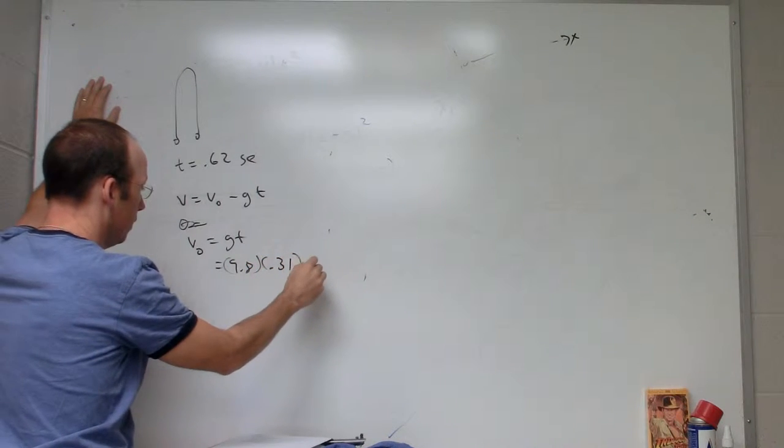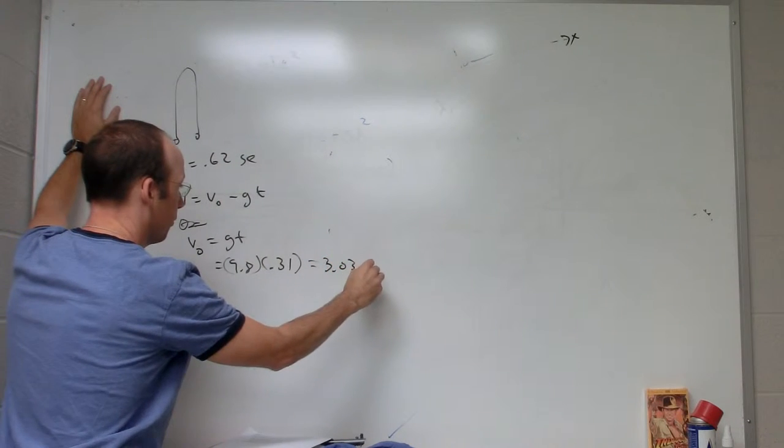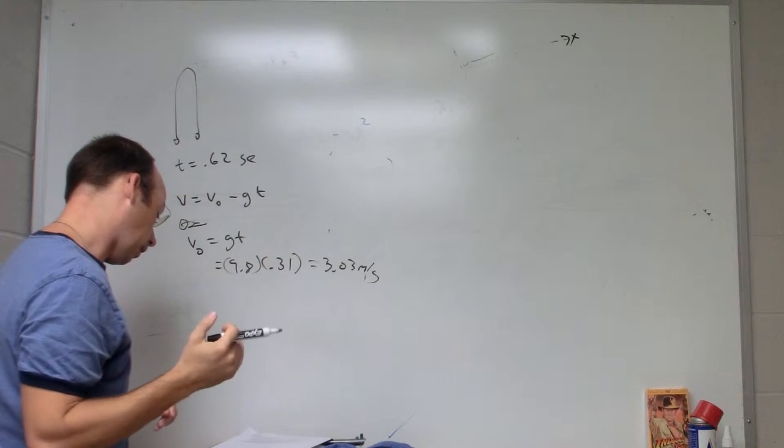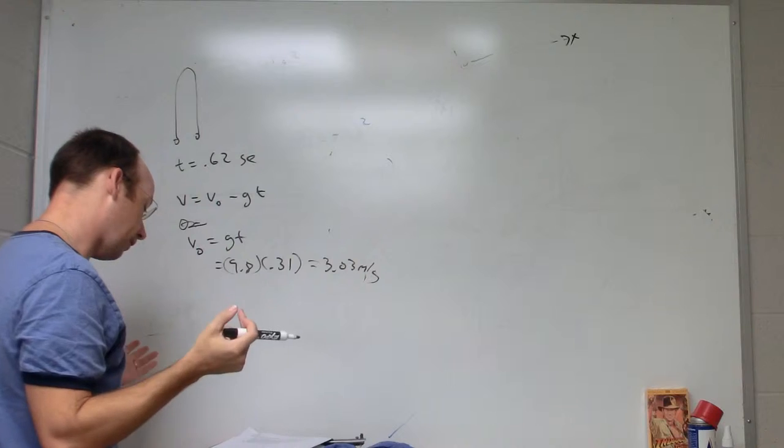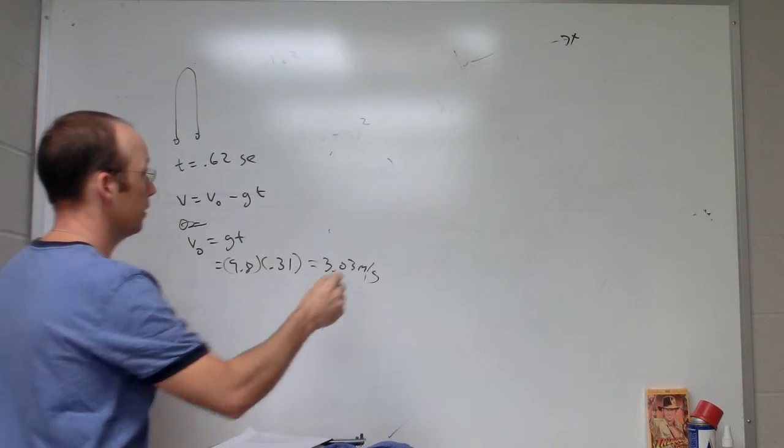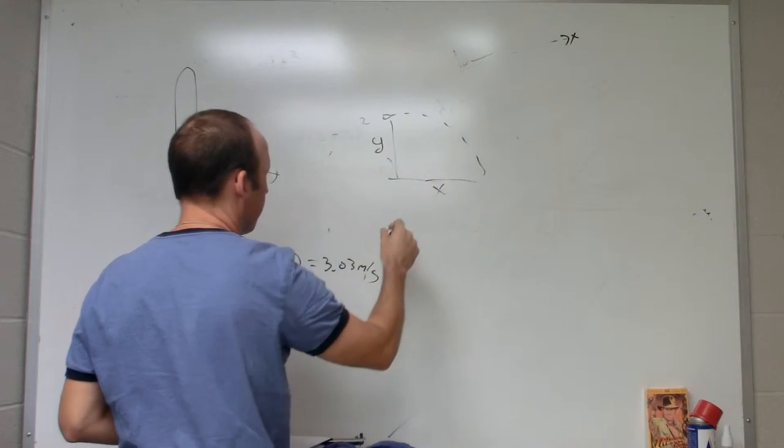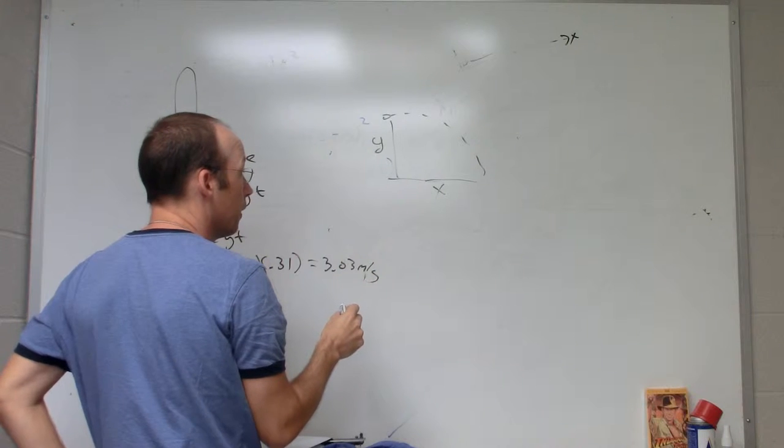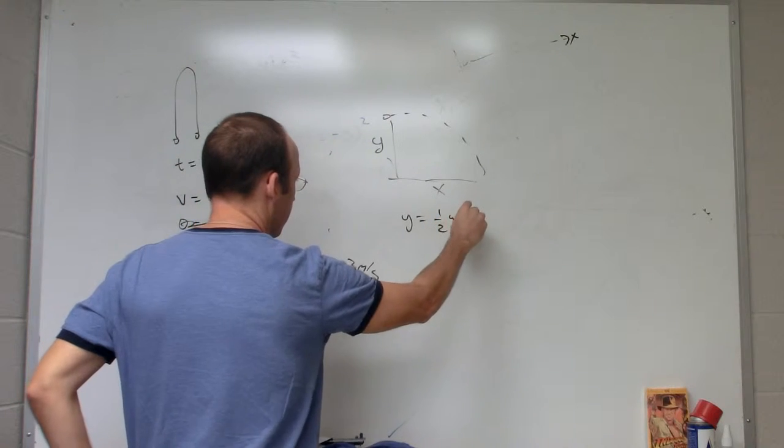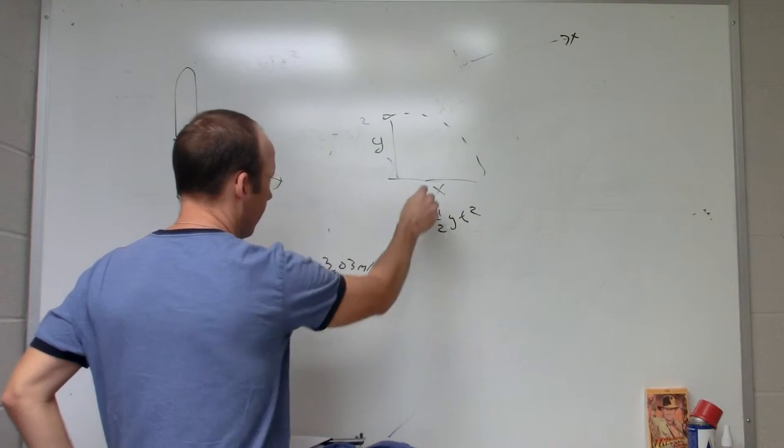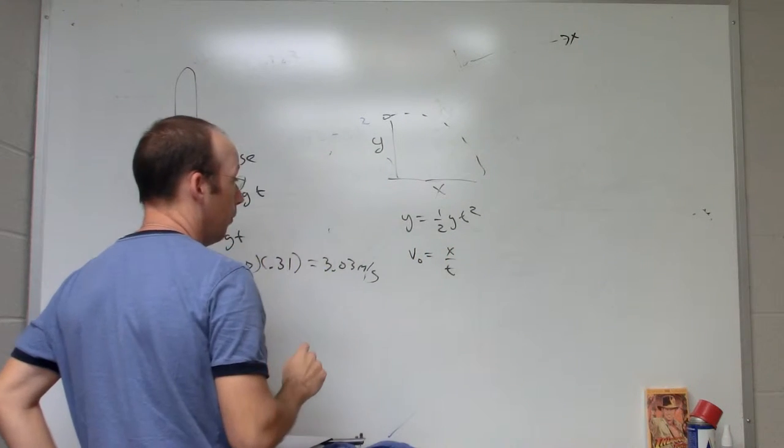The next method, you shoot it horizontally and you measure the two distances. This is a problem we did in class. So I measure y, I measure x. I can get the time from the y coordinate with y equals one-half gt squared, and then I get v zero since I shot it horizontally. V zero is going to be x over t.